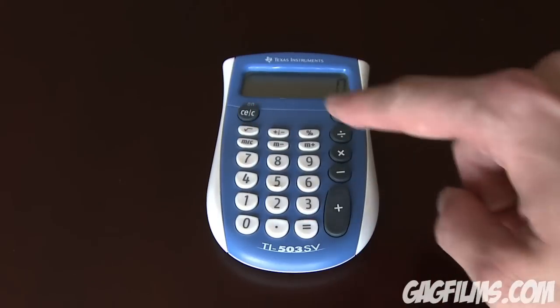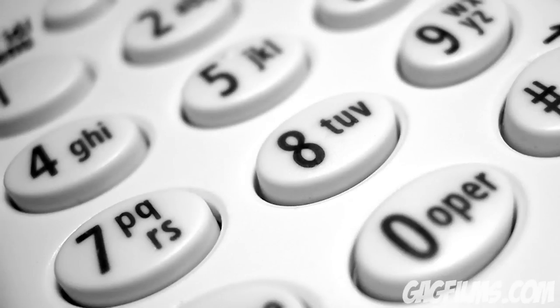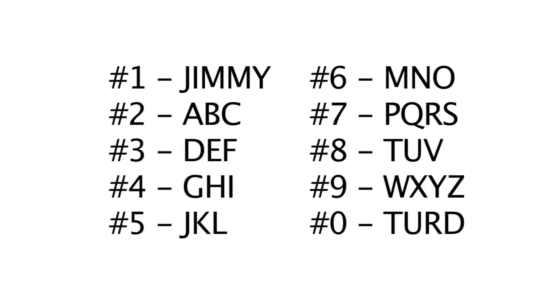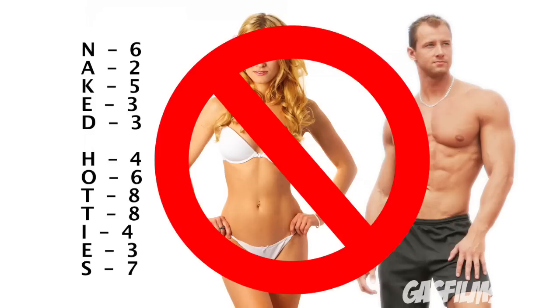Now all you have to do is assign letters to each of the buttons like telephones do. Here's a quick guide: ABC is assigned to number 2, DEF assigned to number 3, and so on. Now resist the urge to type in naked hotties because it won't do anything, pervert.